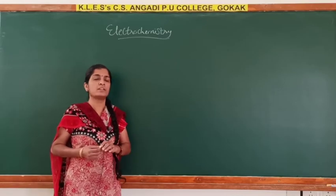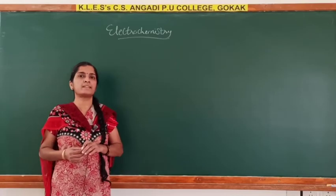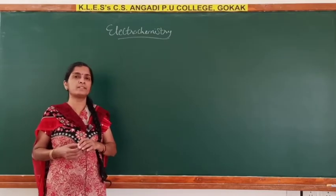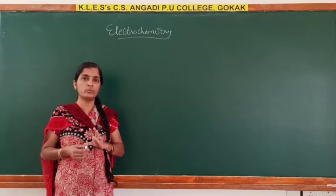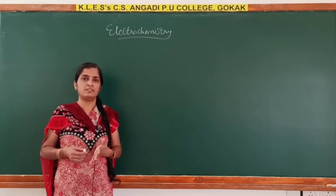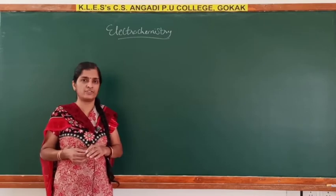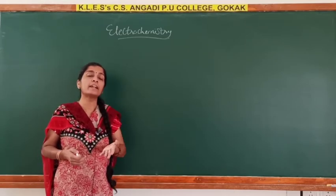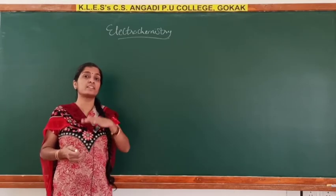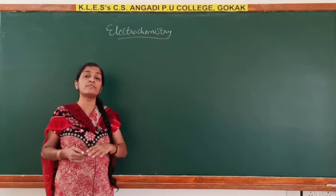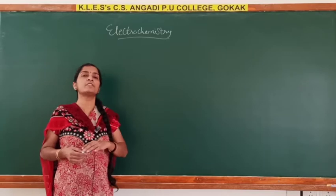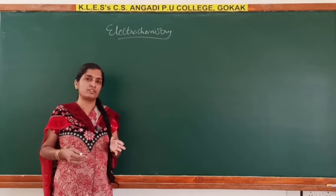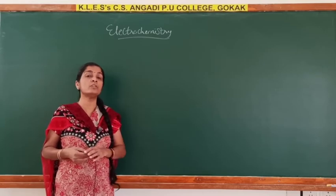In today's class we will discuss about electrochemical cells and Gibbs free energy of the reaction. An electrochemical cell is a cell in which chemical energy of the reaction is converted into electrical energy. When this chemical energy is converted into electrical energy, there is a decrease in the Gibbs free energy of the reaction.